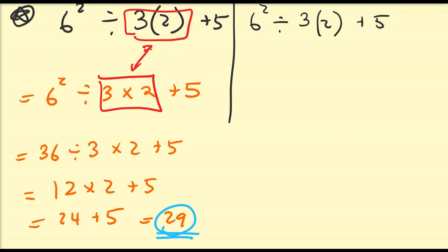Some people treat three parentheses two as a higher priority than three times two. Namely, multiplication by juxtaposition has a higher priority than that of just multiplication. So if that is the case, that means we need to do three parentheses two before we proceed. So this is actually going to be six squared divided by six plus five. So if that's the case, this is going to be 36 divided by six plus five. So this is going to be six plus five. And this is going to give us an answer of 11.